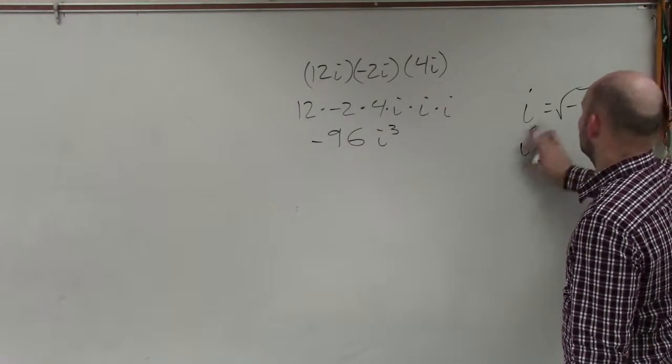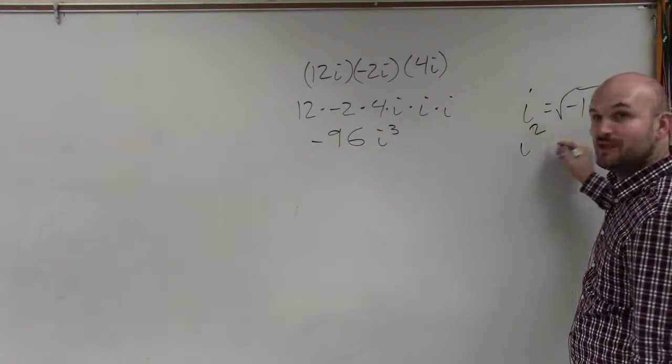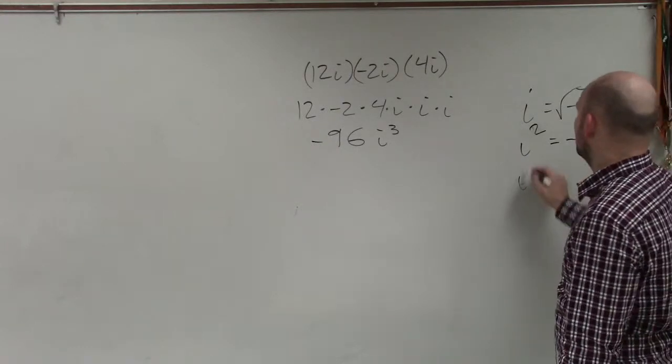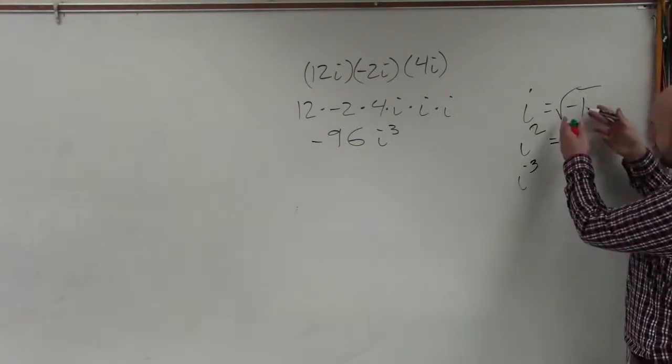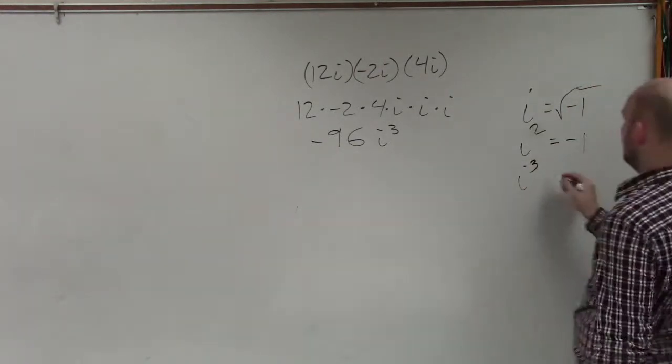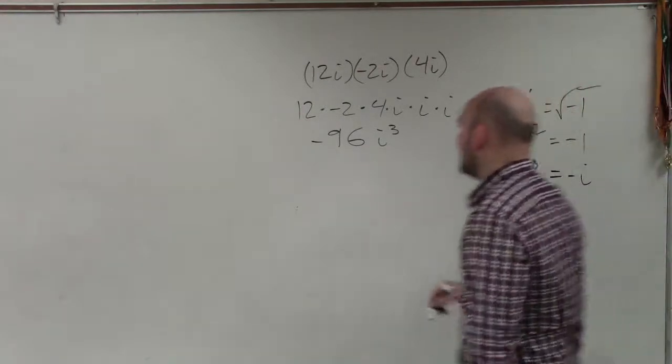So i squared, that's a horrible squaring, i squared is just going to equal negative 1. So i cubed would be the square root of i times negative 1, which would be a negative i. So therefore,